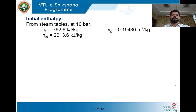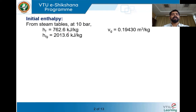Since pressure is given, we refer to the pressure table in the steam tables. When temperature is given, refer to the temperature table; when pressure is given, refer the pressure table. In this problem, pressure is 10 bar, so from the steam table at 10 bar pressure: Hf = 762.6 kJ/kg (sensible heat), Hfg = 2013.6 kJ/kg (latent heat of evaporation). Also note the specific volume: Vg = 0.19430 m³/kg. Vf is very small and can normally be neglected.